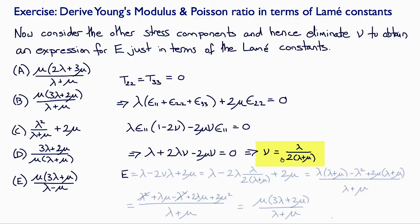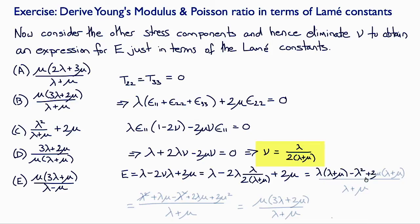Now we can substitute that into the expression we got above for E, which was lambda minus 2 nu lambda plus 2 mu, to get lambda minus 2 lambda times lambda over 2 times (lambda plus mu), plus 2 mu. That can be rearranged to lambda times (lambda plus mu) minus lambda squared plus 2 mu times (lambda plus mu), all over (lambda plus mu).